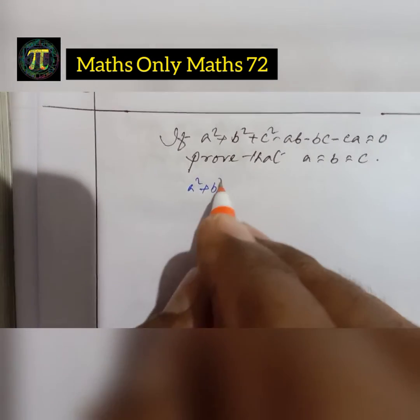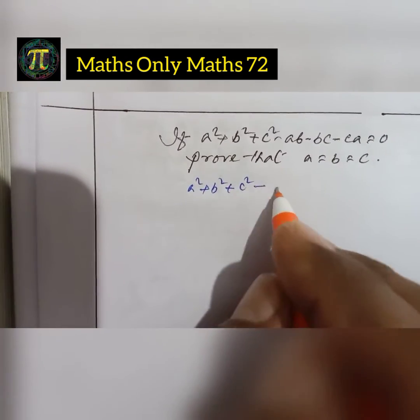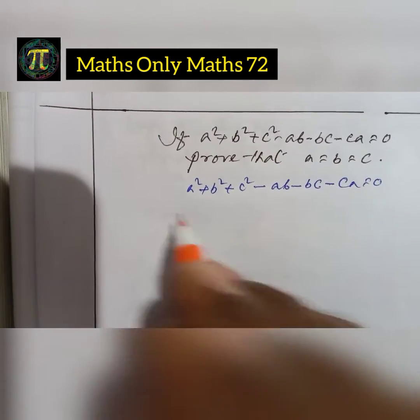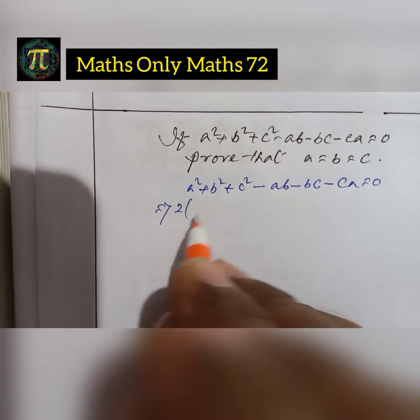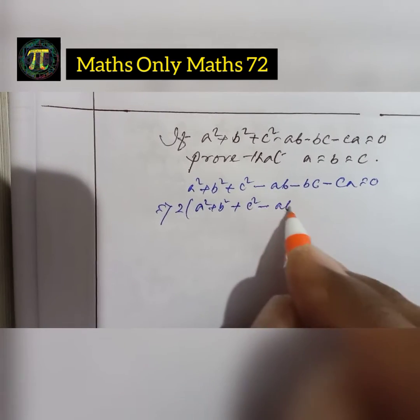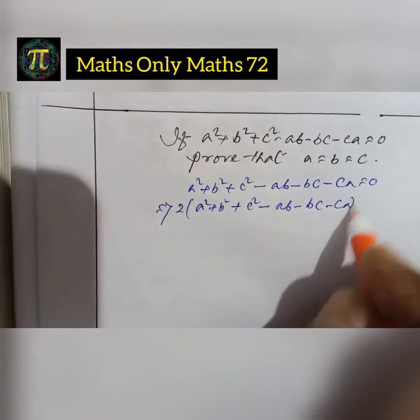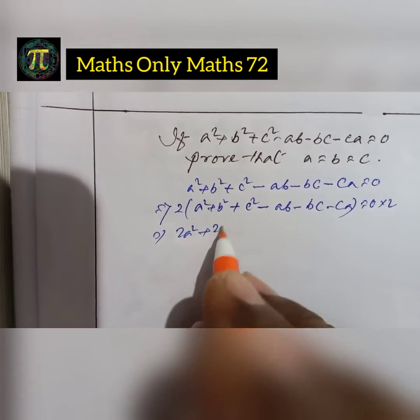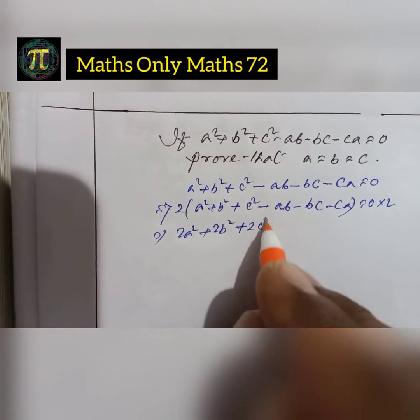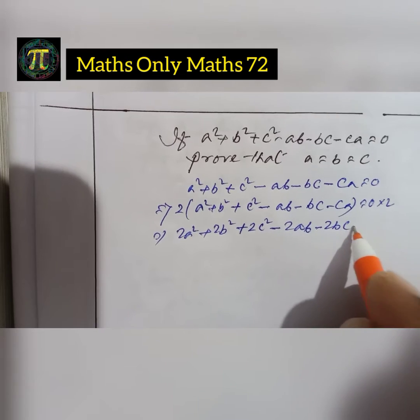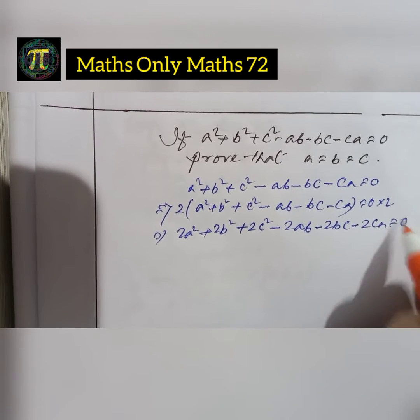Given a²+b²+c²-ab-bc-ca=0. We multiply both sides by 2. So we get 2a²+2b²+2c²-2ab-2bc-2ca=0.